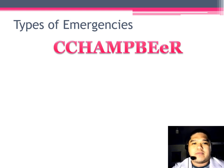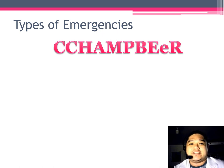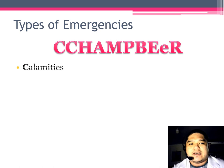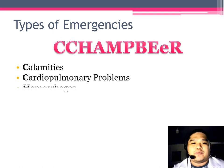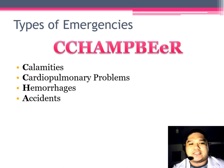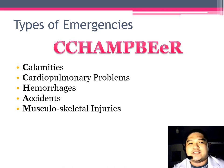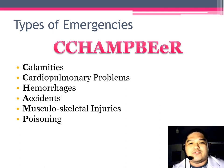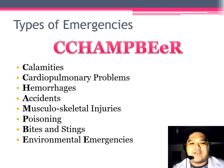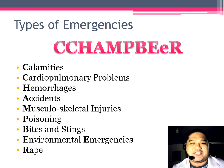Welcome back to our discussions on the different types of emergencies. Last time, we were able to discuss different calamities, cardiopulmonary problems, hemorrhages, accidents, musculoskeletal injuries, and poisoning. This time, we are to cover the following topics: bites and stings, environmental emergencies, and rape as a type of emergency.